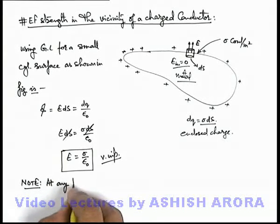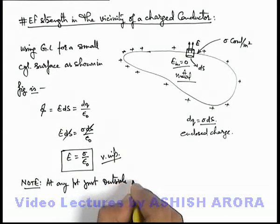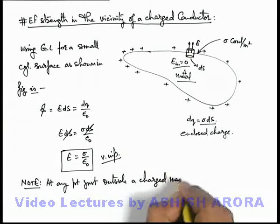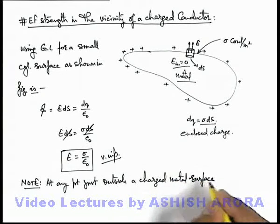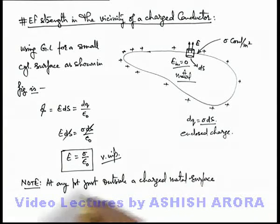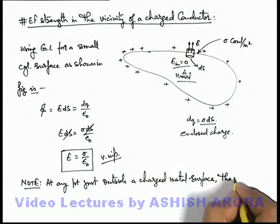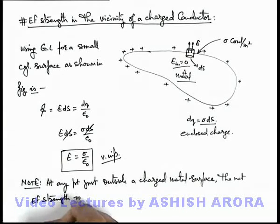At any point just outside a charged metal surface, always remember that it is irrespective of the shape of the surface, the net electric field strength is sigma by epsilon not.